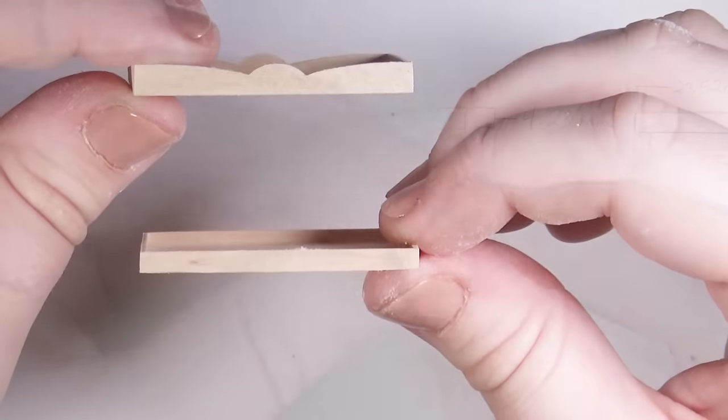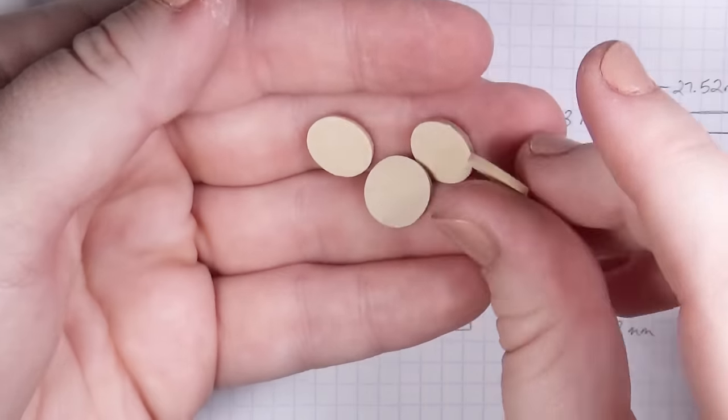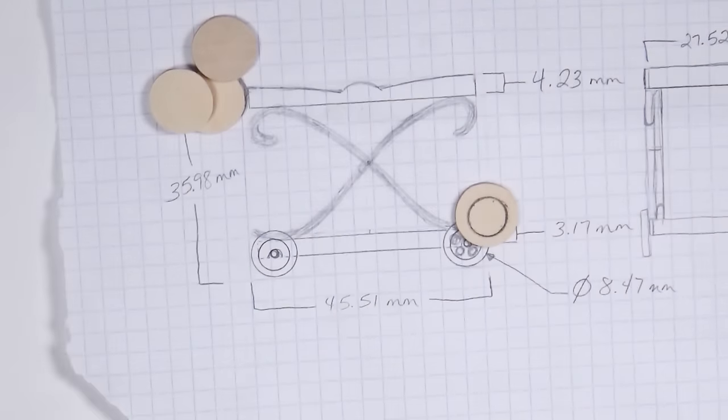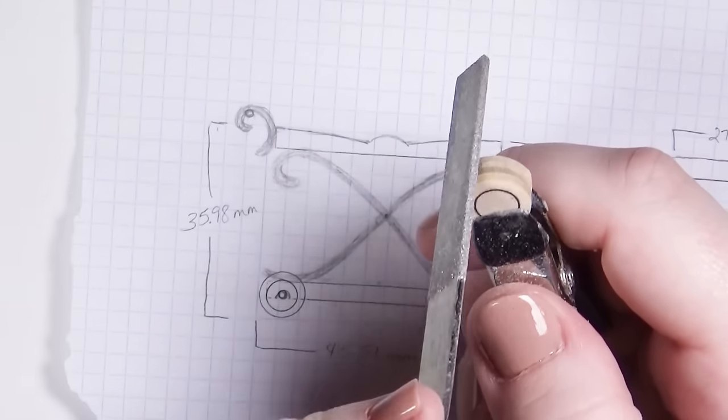I made the wheels next. The circles can be found as is at a local craft store as well. I traced the size of the circle I wanted to carve out and used that as a template to carve the other four simultaneously.